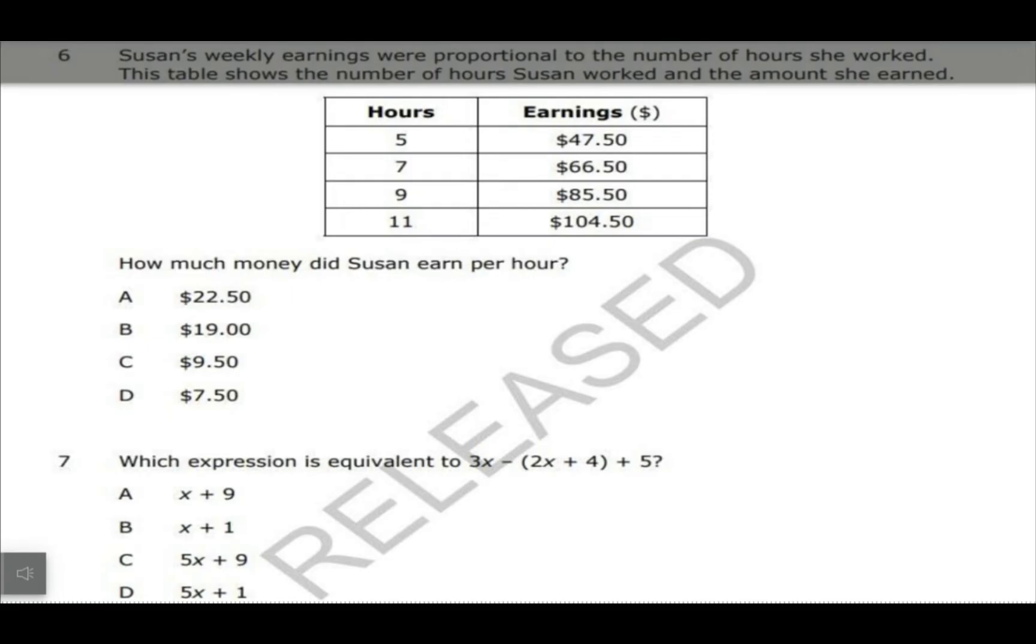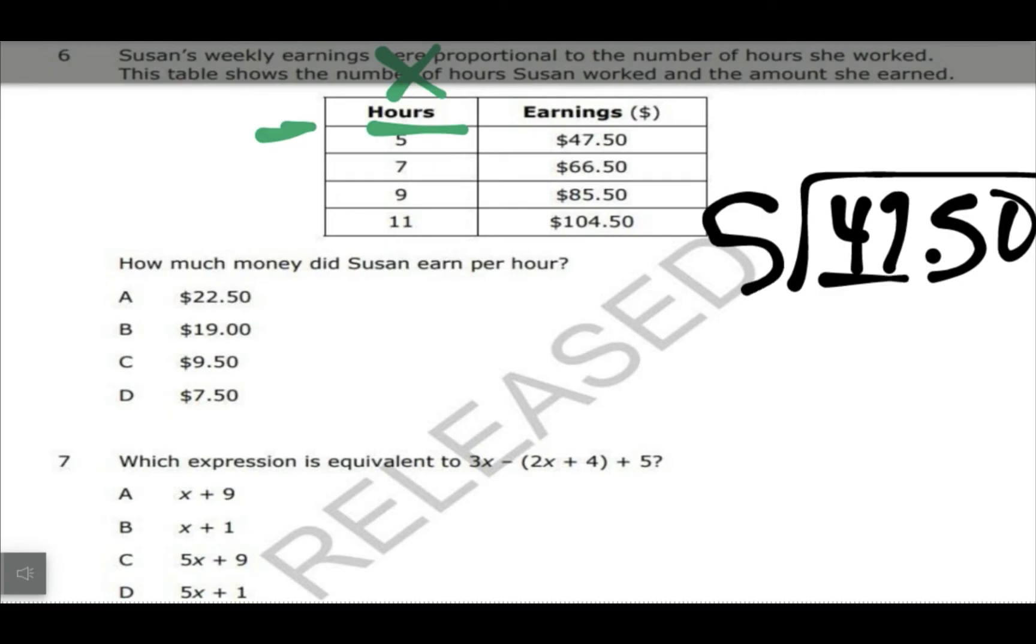Susan's weekly earnings were proportional to the number of hours she worked. The table shows the number of hours Susan worked and the amount she earned. How much money did she earn per hour? So you can really take any of these. I usually just kind of do the top, and then I basically want to take our dollars per hour, so our Y divided by X again. And again remember, usually I put the X in the first column. So we have, we just want to take 47.50 and then divide that by five.